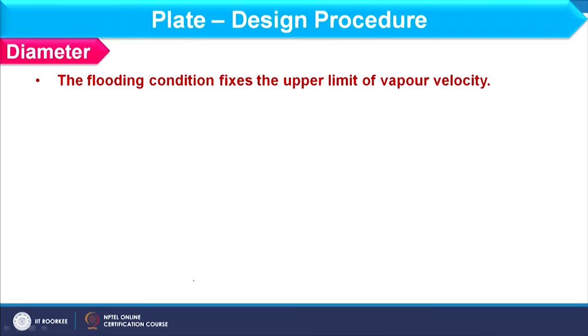From now onward we will consider different points in detail. First we focus on calculation of diameter. As far as column diameter is concerned, it depends upon the flooding condition. The flooding condition can be fixed by the vapour flow rate, so we should set the upper limit of vapour flow rate. We should choose the vapour velocity in such a way that flooding should not occur. Depending upon this vapour velocity, the flooding condition will be fixed and then we will fix the column diameter.